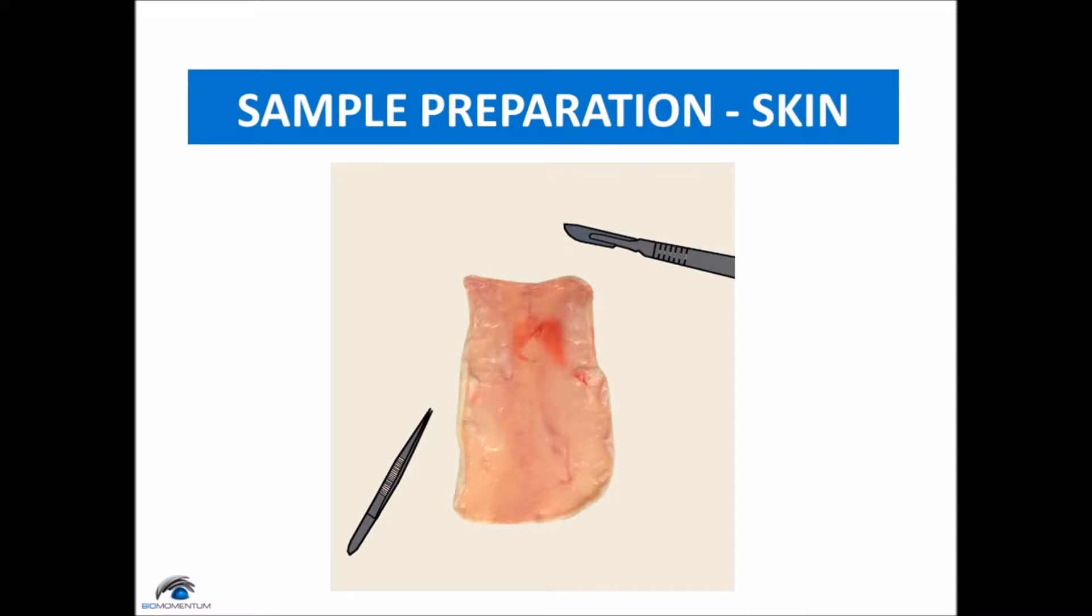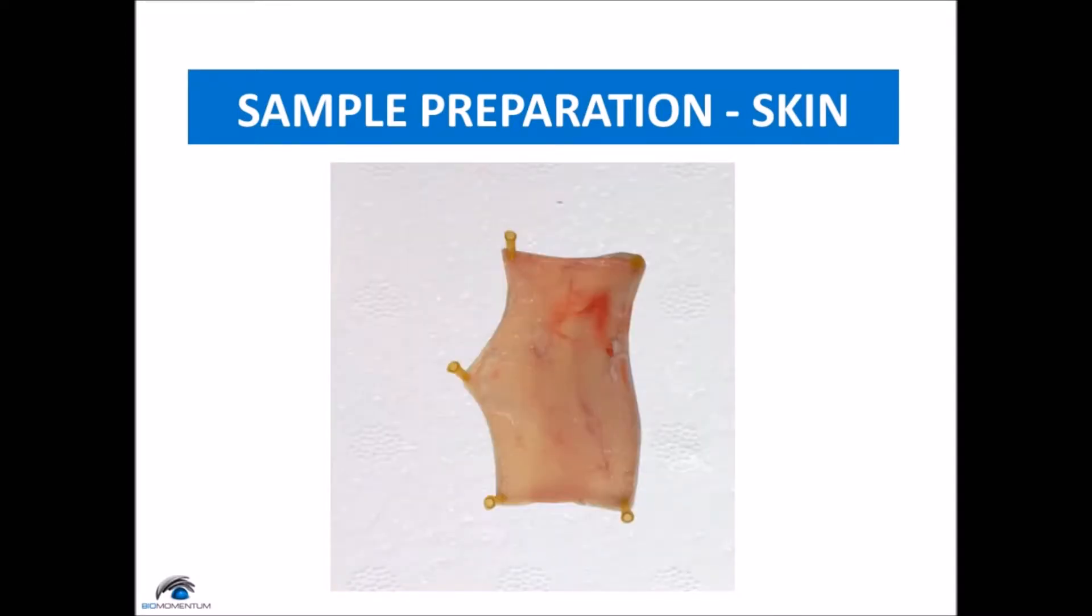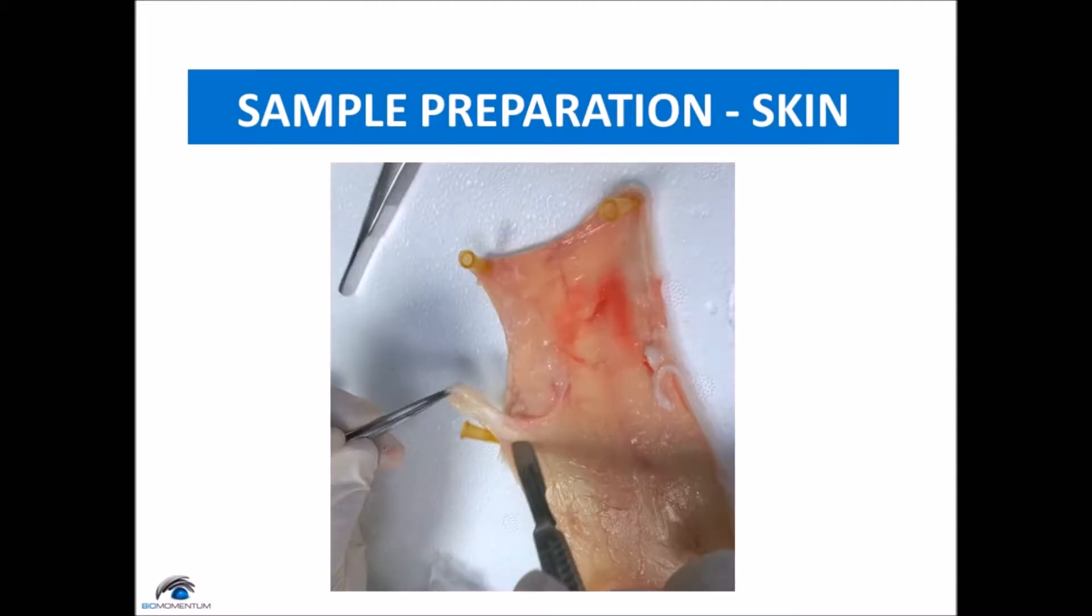Avoid keeping muscle and fat on the skin. Lay the rectangular shaped skin on the styrofoam board, hair facing down. Secure the sample by using needles. Now remove the tissue layer beneath the dermis.